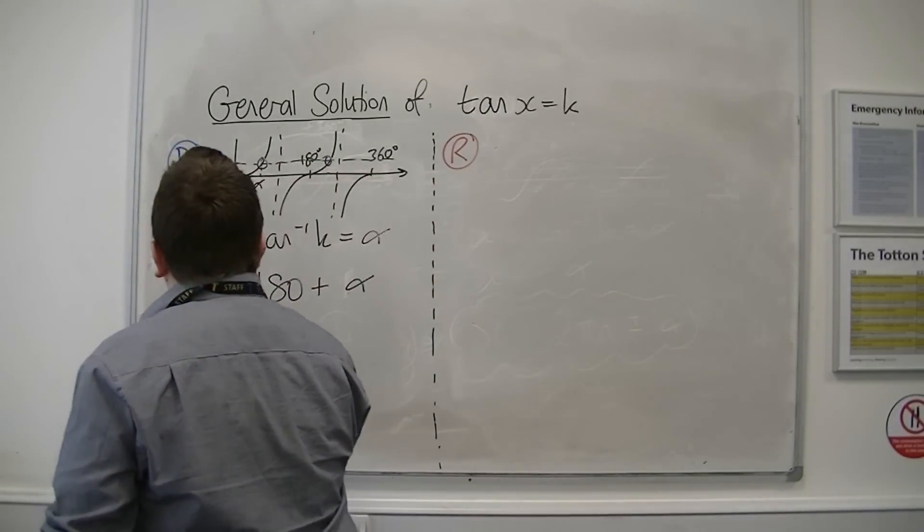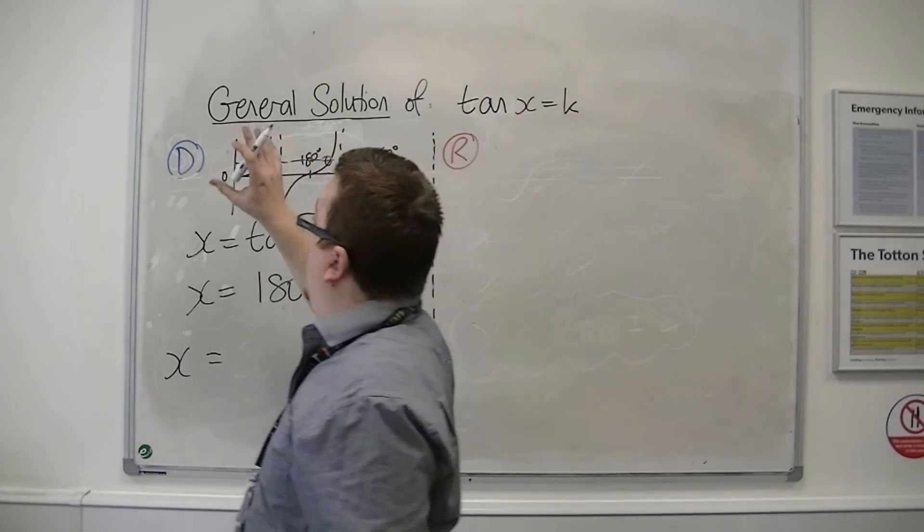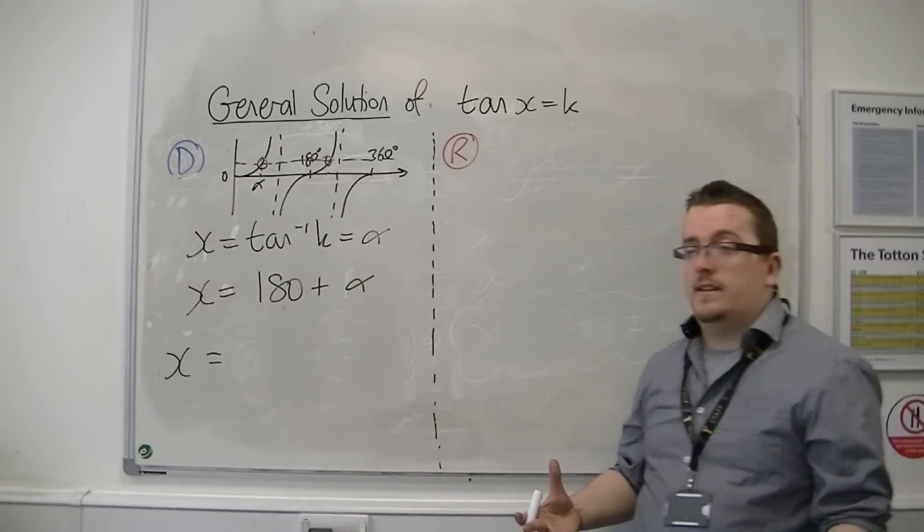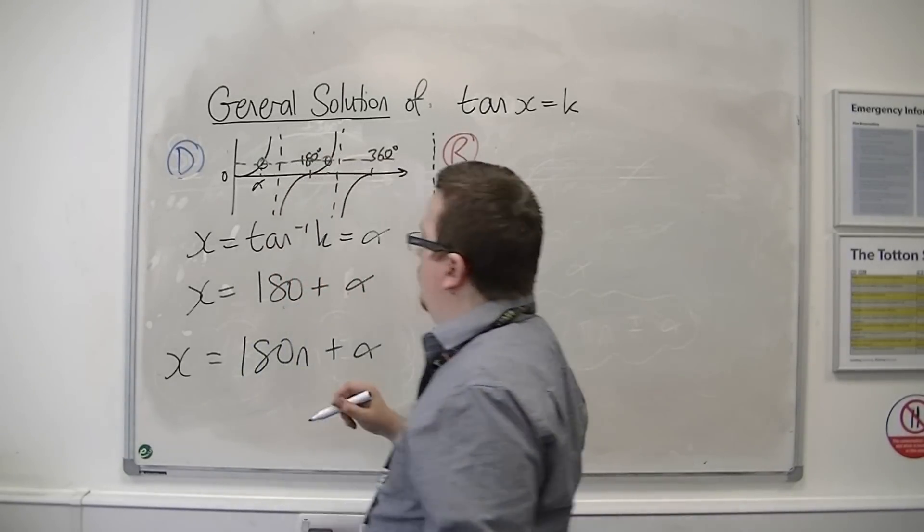So in general, if I want to keep on finding all the solutions along the line, to the right or to the left, I would add or subtract multiples of 180. So I'd have 180n plus my value of alpha.